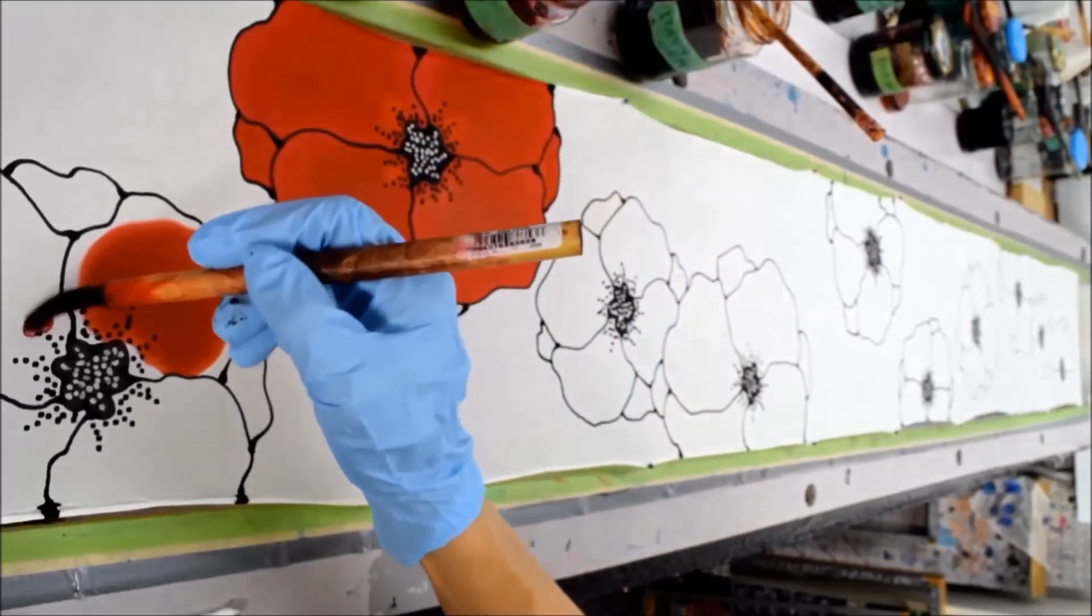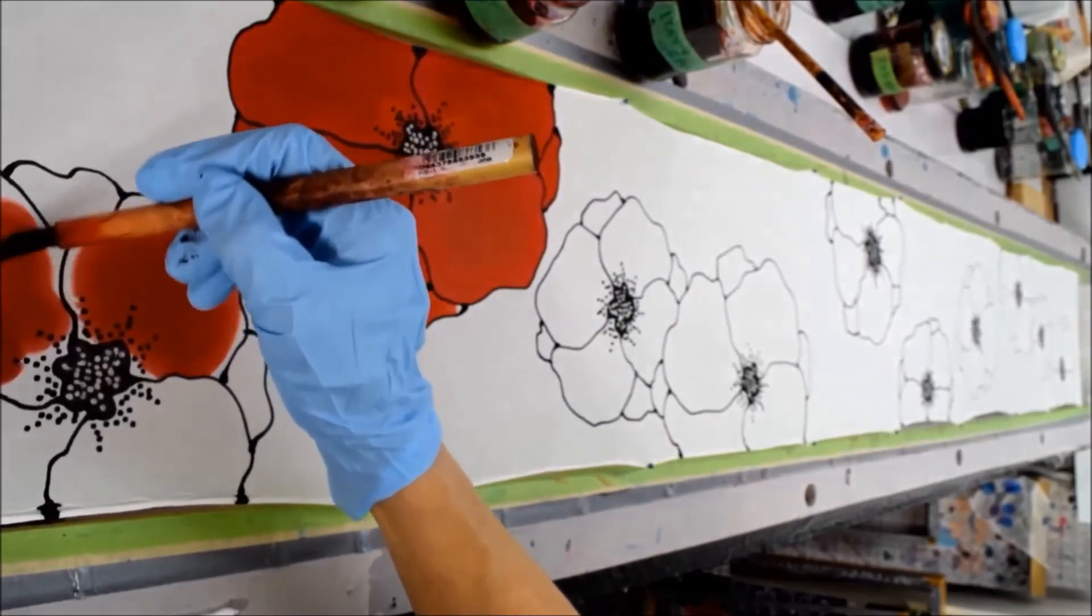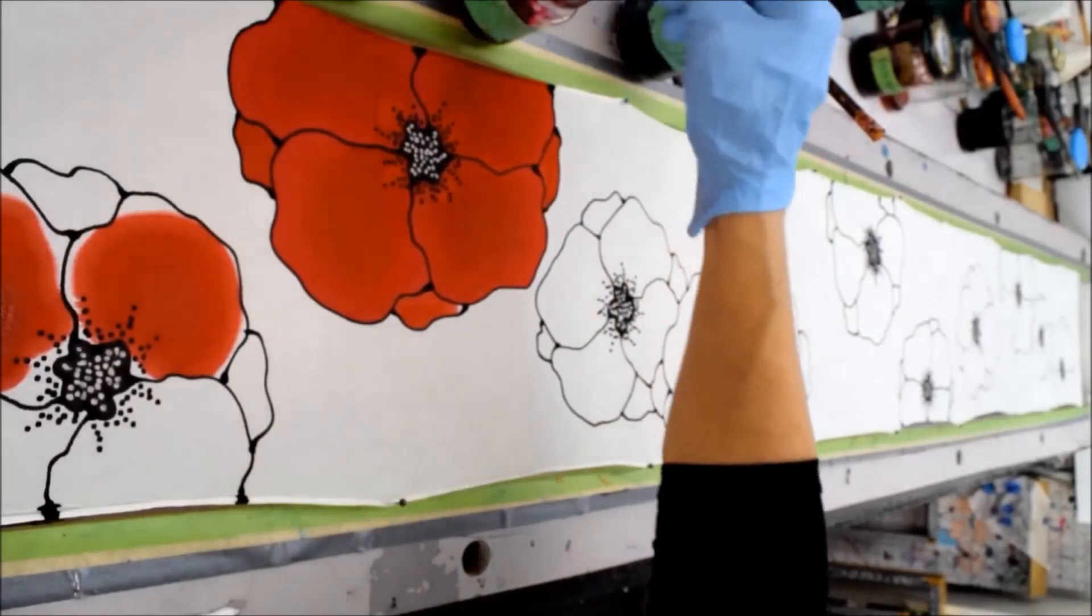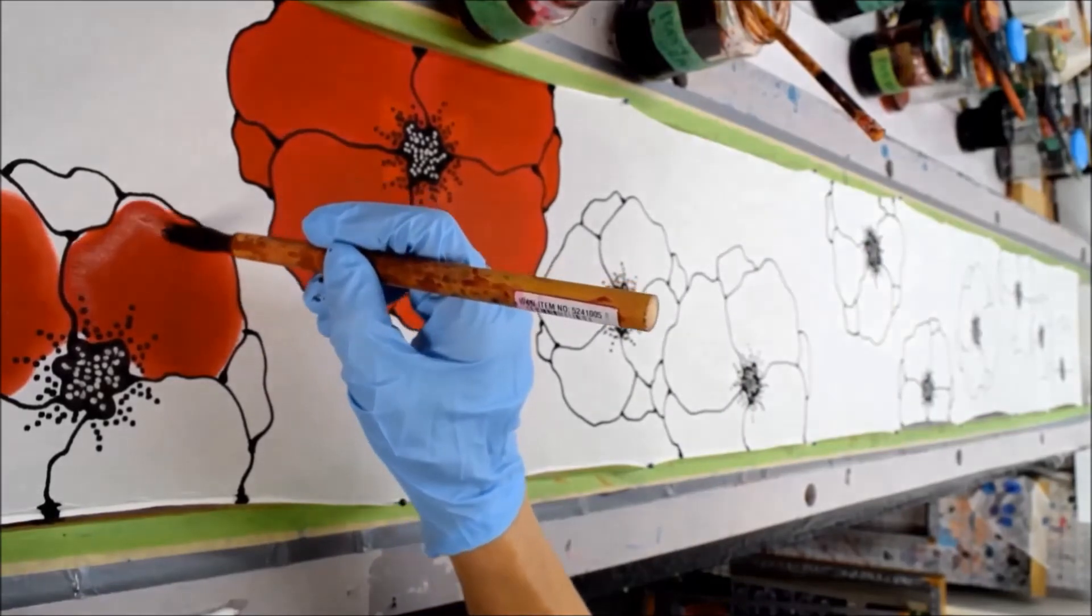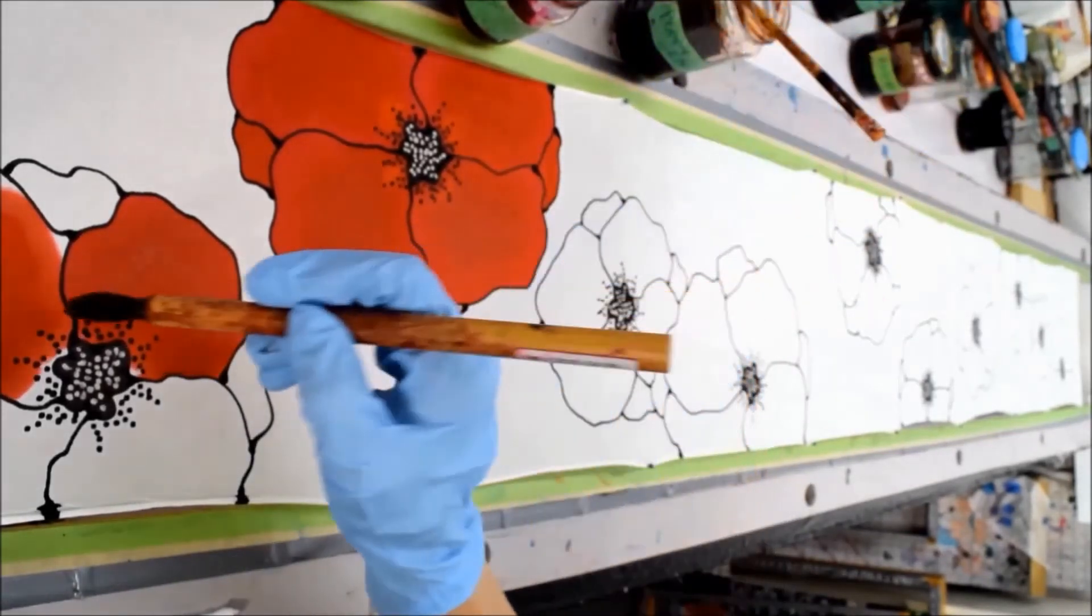So I'm going to let these all dry so that when I want to put salt on the background for texture, the salt won't affect the blending that I've done on the poppies.